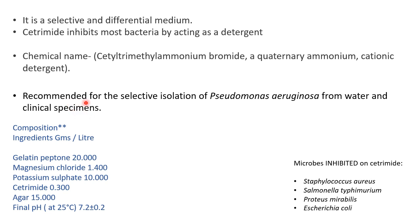Cetrimide agar is recommended for selective isolation of Pseudomonas aeruginosa from samples like water, pharma products, or clinical specimens. In case of pharma products, it is used in quality control to check whether there is contamination or not. The composition includes ingredients like gelatin peptone, magnesium chloride, potassium sulfate, cetrimide, and agar.